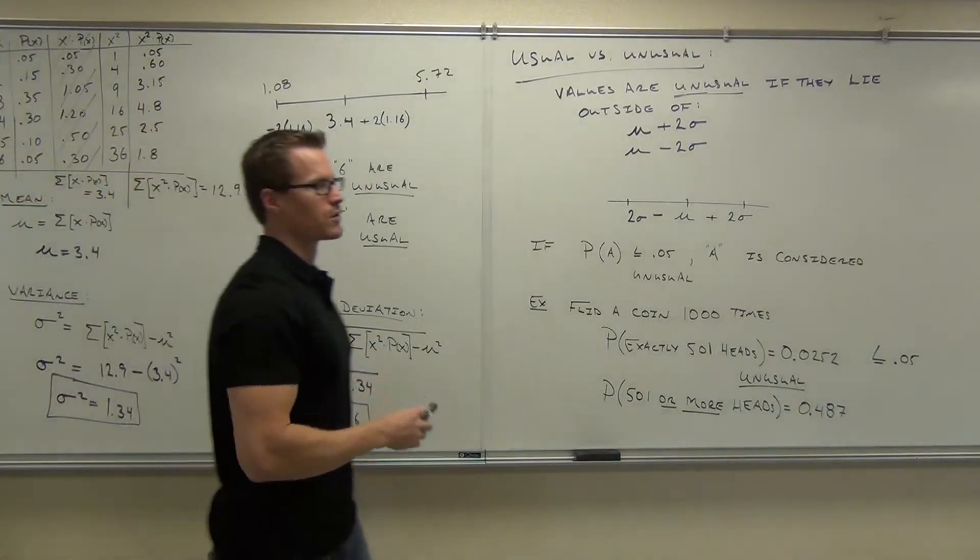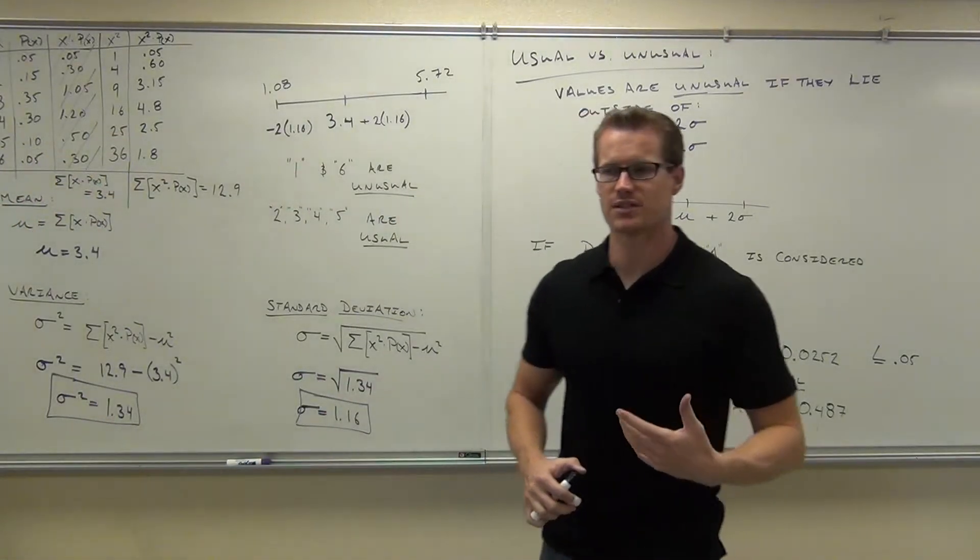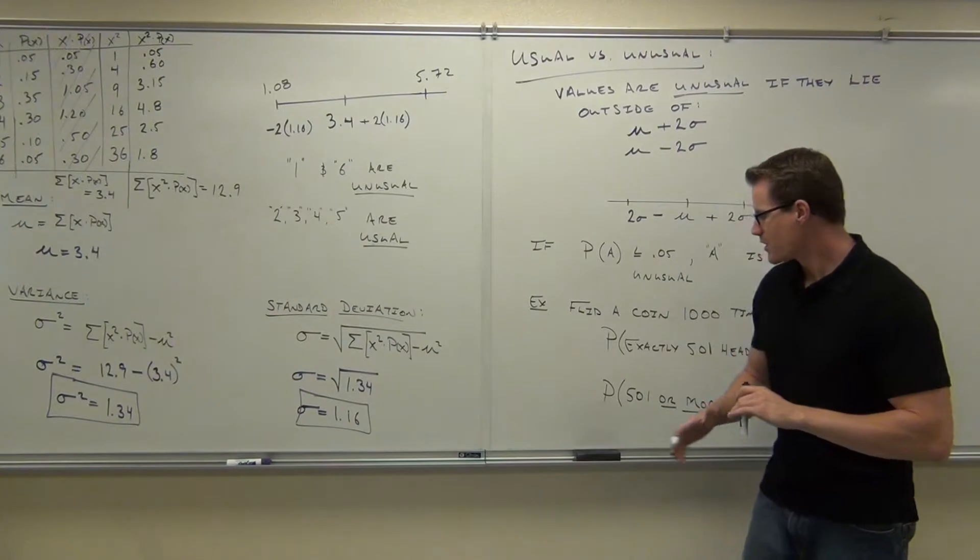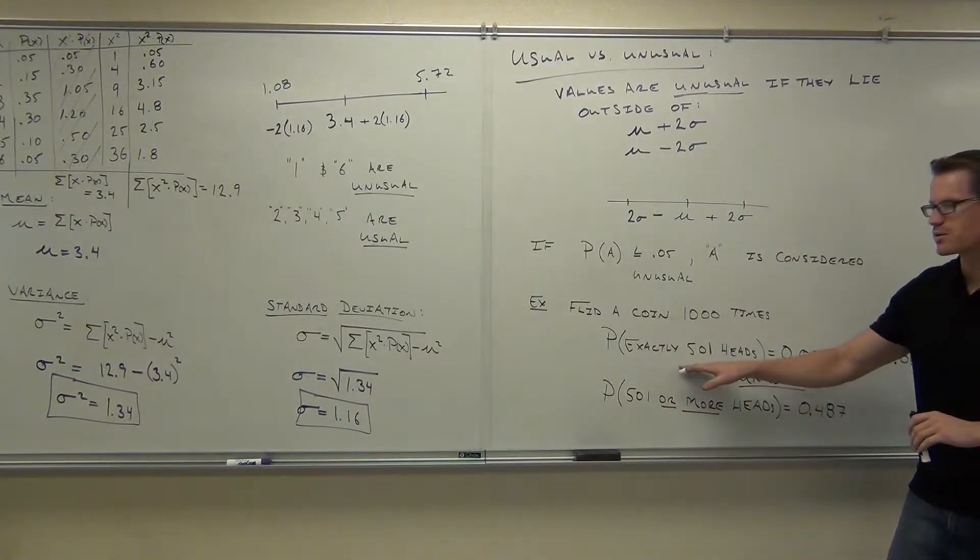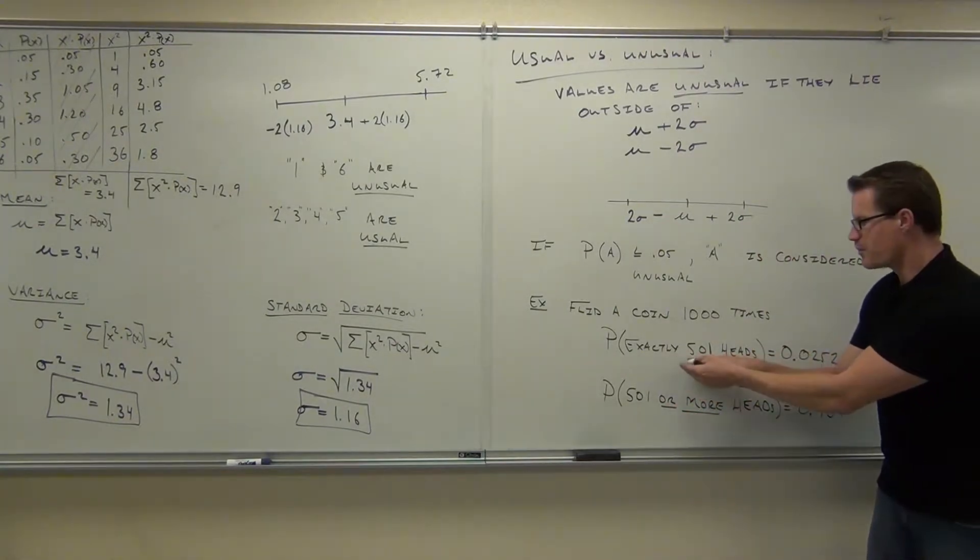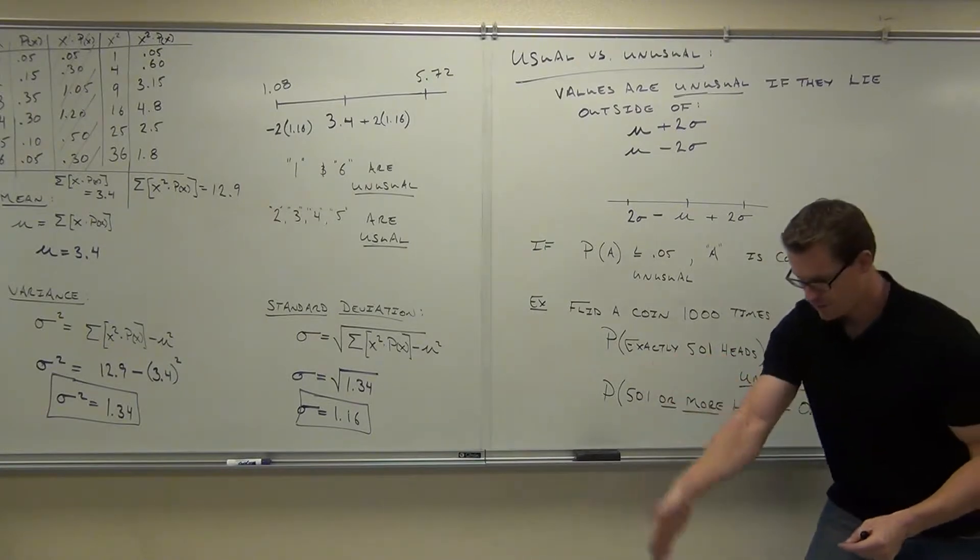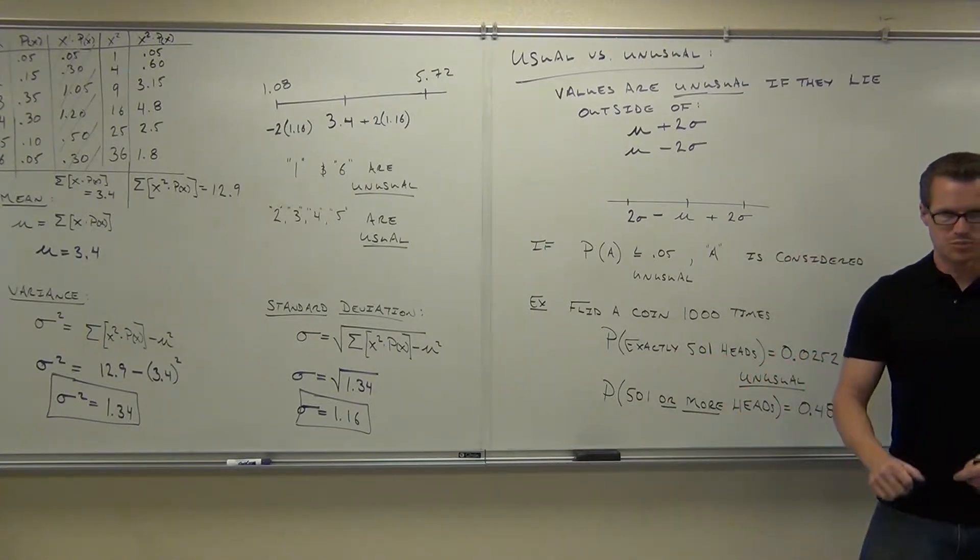The reason why it's so much bigger, I need you to understand this before I get to the next section. The reason why this one is so much bigger than this one, I need you to think about this one. This is the probability of landing exactly on 501 heads. That's pretty rare.